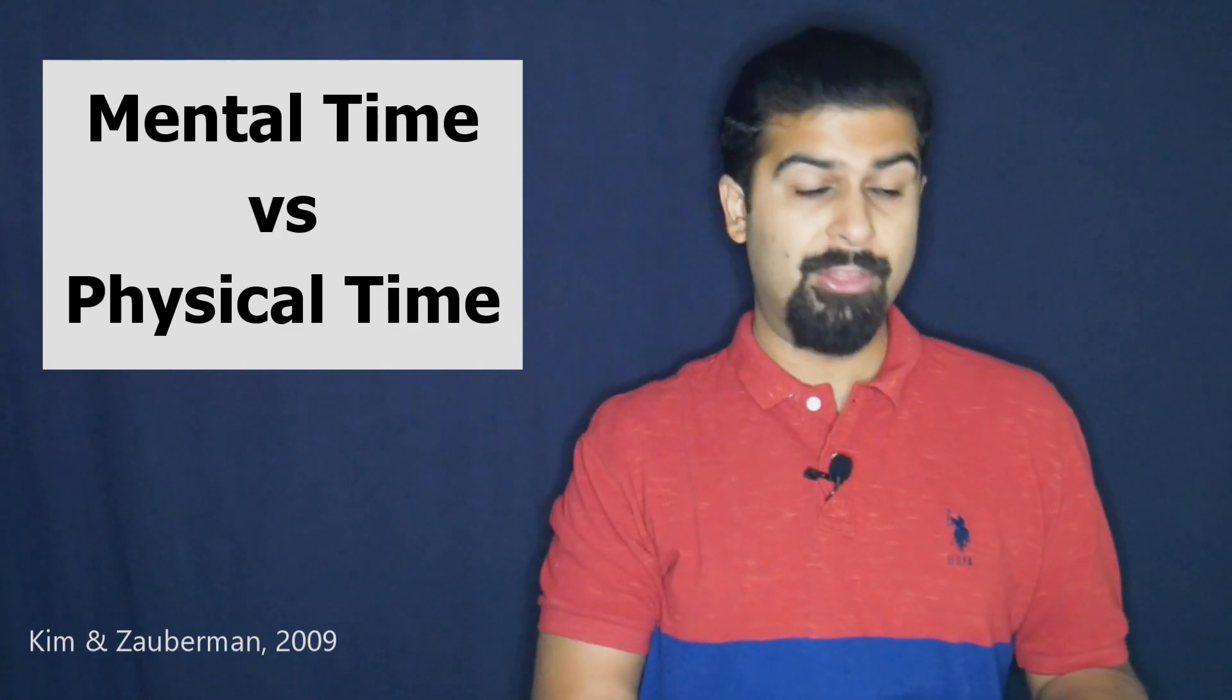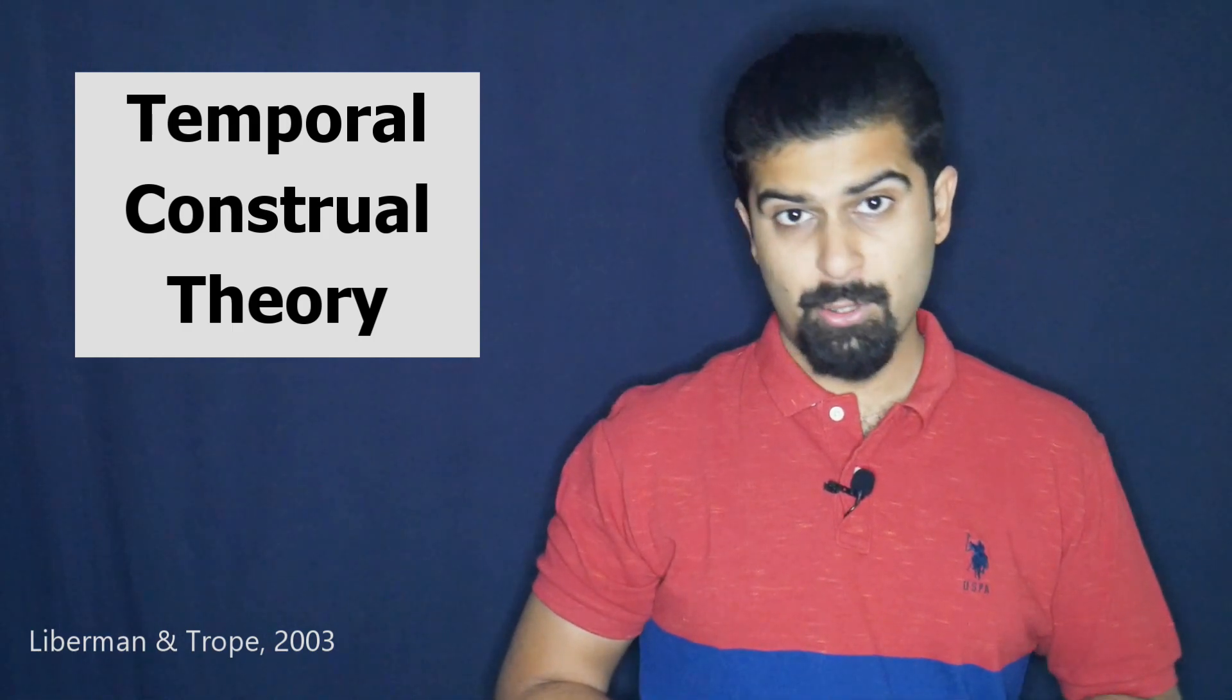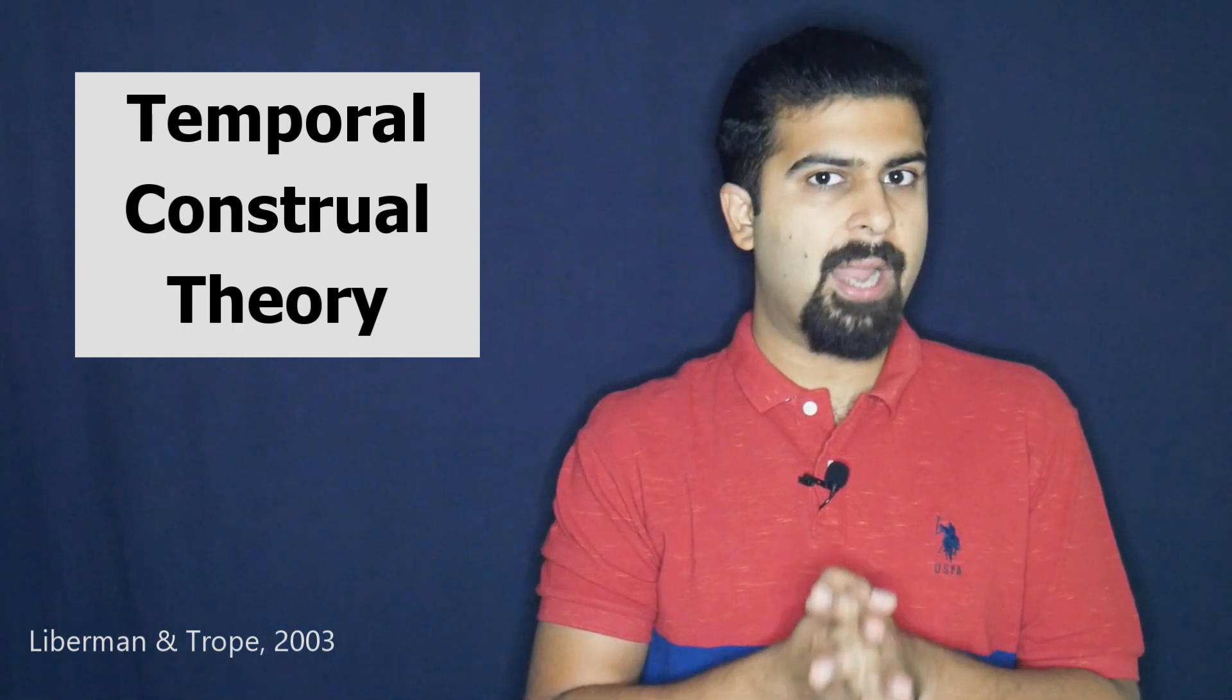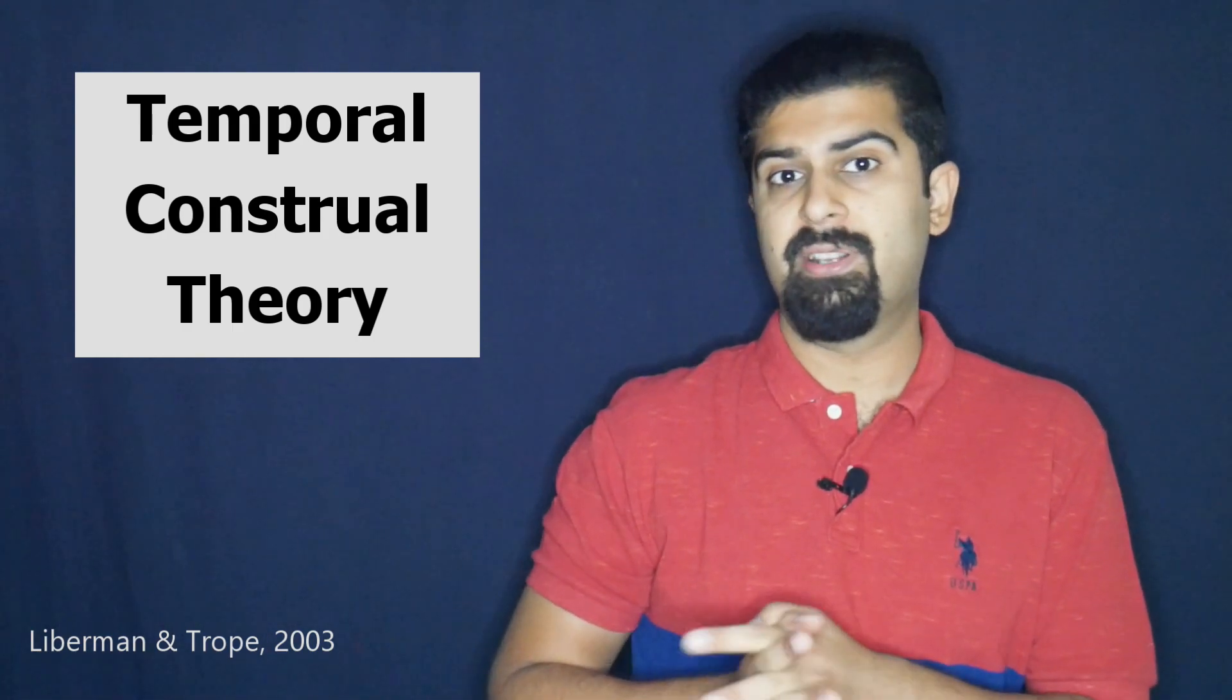It is likely that your estimation of one minute is off the one minute mark on the timer. Now as time intervals get longer, such as a month or a year, our estimation of time becomes more erroneous. Such errors in time perception may lead to phenomena such as preference reversal, which we discussed in the experiment.